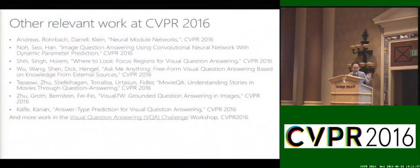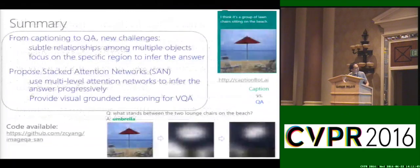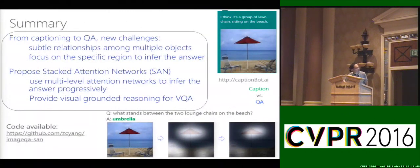Back to, and there's many other related papers in this field, just in this conference for example, and you'll see more and more probably in the coming future. As a summary, we have seen a lot of interesting work in image captioning since last year and two years ago, but when we move from captioning to question answering there are many new challenges. For example, we need to understand the very subtle relationships of the objects, we also want to focus on a particular region rather than the whole picture so we can infer the actual answer. In this case, motivated by these new challenges, we propose a new model. We try to use multi-level attention networks to infer the answer more progressively, and this model can provide more clear visual grounded reasoning which is necessary for the vision question answering task. Here is an example and we have code shared on GitHub. Thanks.